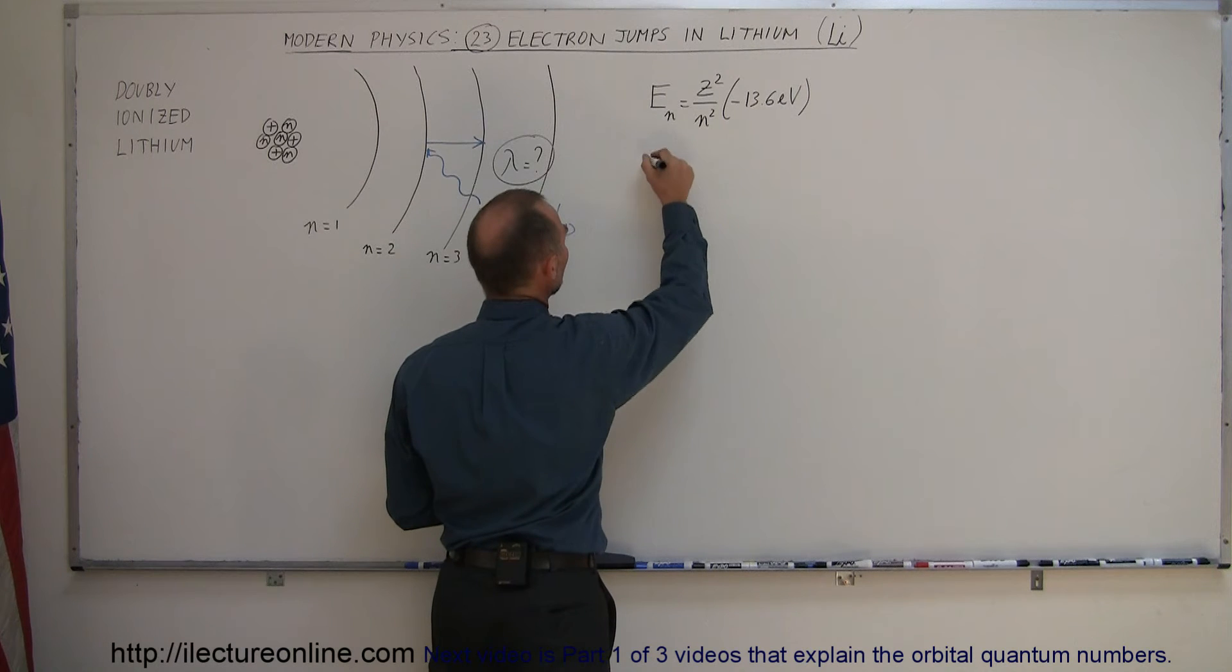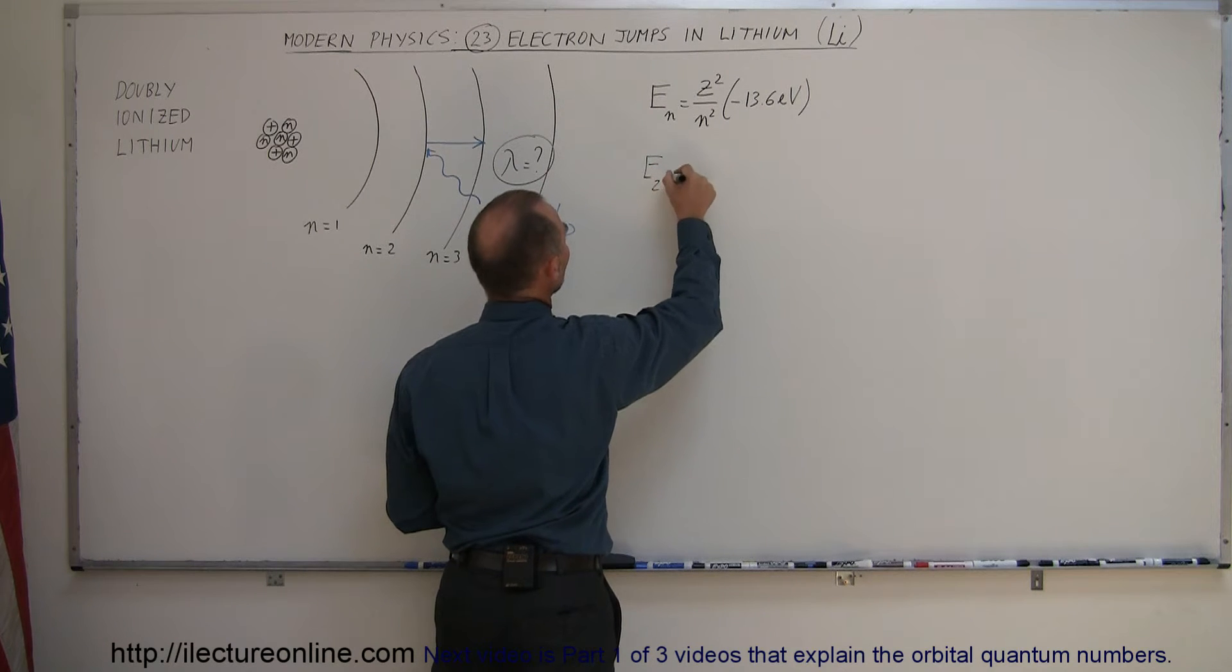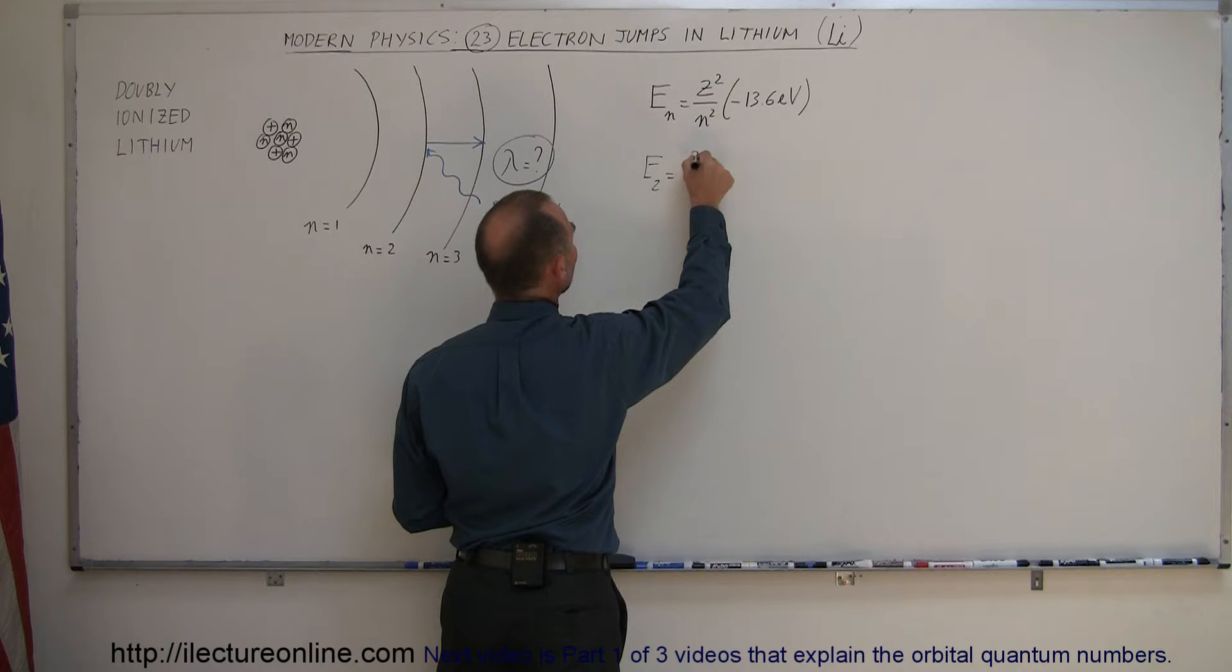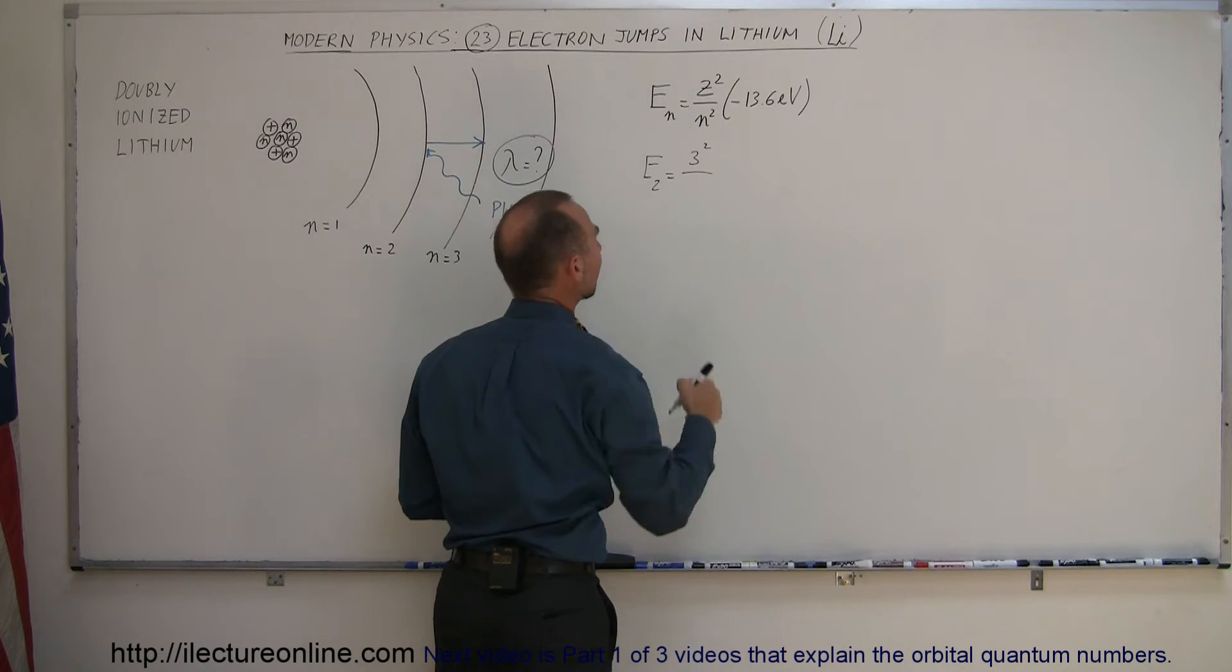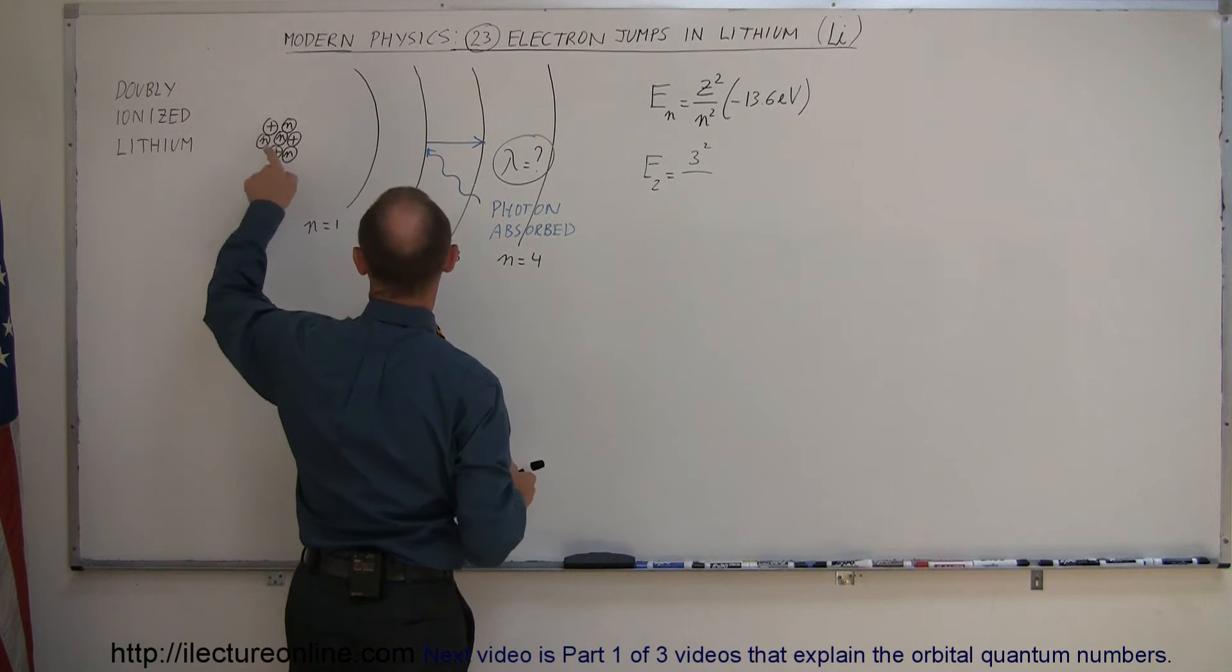Using this equation, we can say that E sub 2 is equal to 3 squared. Remember, the atomic number for lithium is 3 because it has 3 protons.